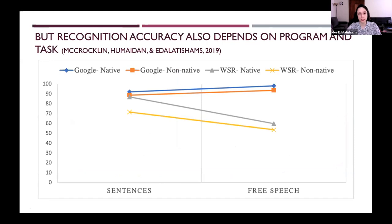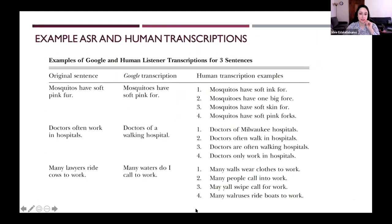In an earlier study, we found that recognition accuracy also depends on the ASR program used and the task. Windows Speech Recognition accuracy was much higher for both native and non-native groups when speakers read sentences, whereas it went down with free speech. Google Voice Typing, in contrast, did slightly better with free speech than with read speech. So there is a difference there too.